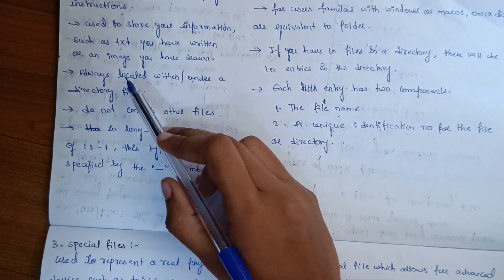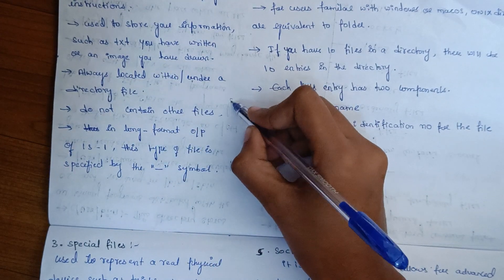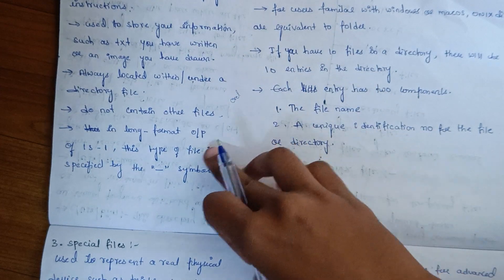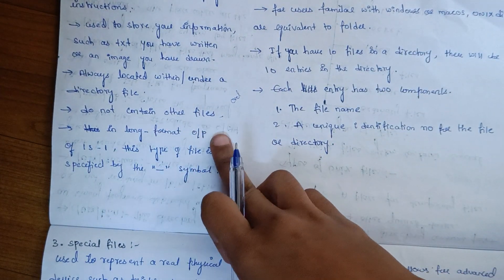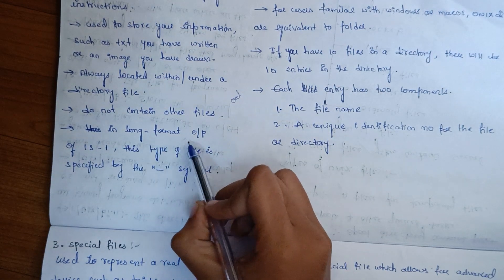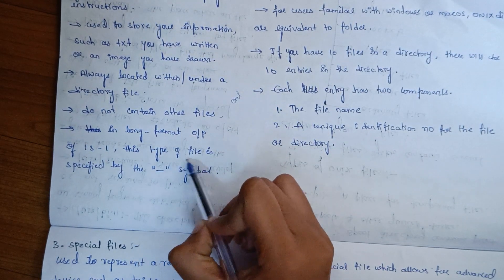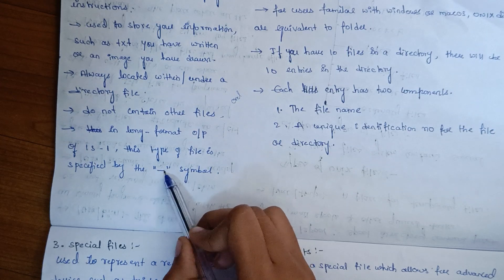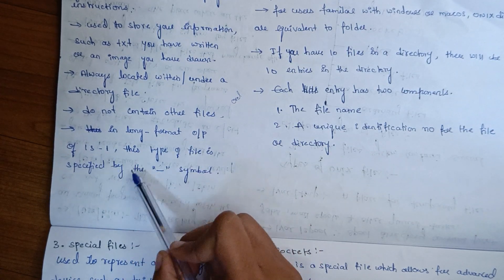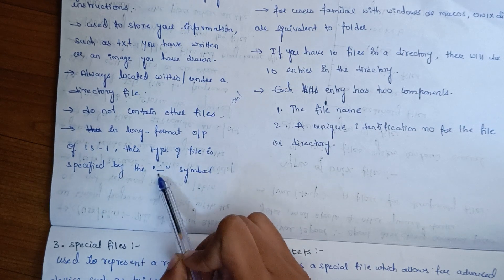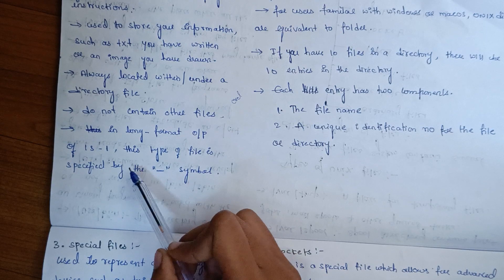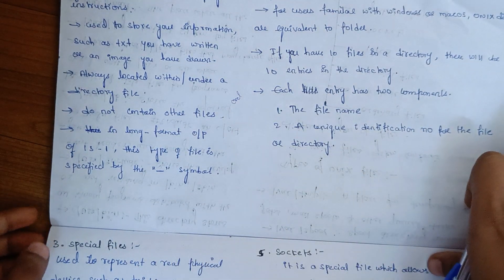Ordinary files do not contain other files. In the long format output of ls -l, this type of file is specified by the dash symbol.